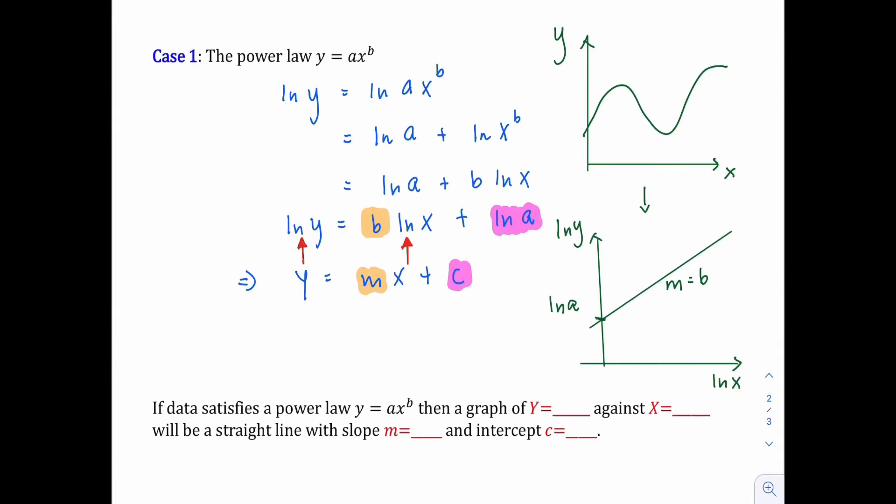Let's answer the bottom part here. If the data satisfy a power law y equals ax power b, then a graph of y equals - which means the y-axis becomes ln y - against the x-axis becomes ln x. It becomes a straight line with a slope m equals b and the intercept c becomes ln a. That's how we transform a relationship into linear form.